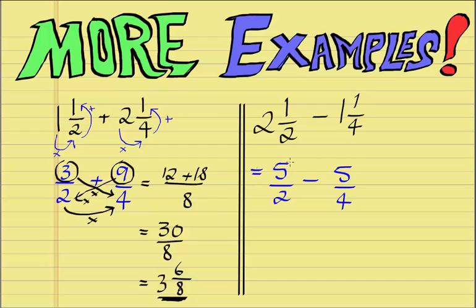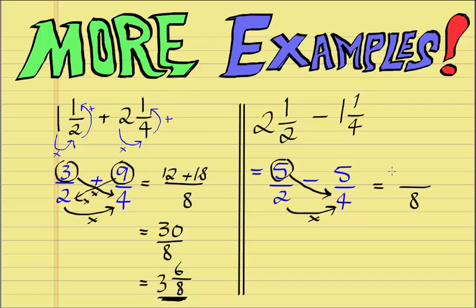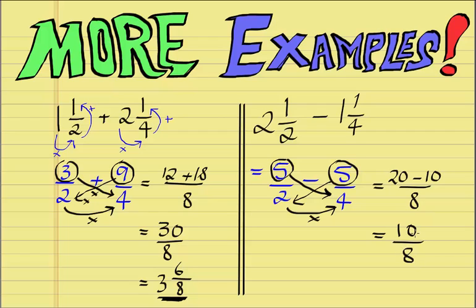Same rules apply. We multiply the denominators together first. So 2 times 4 is 8. Remember when it comes to subtraction, the order of the next steps is essential. The numerator of the first fraction gets multiplied by the denominator of the second fraction first: 5 times 4 is 20. We carry over our subtraction sign. Then we multiply the numerator of the second fraction by the denominator of the first fraction: 5 times 2 is 10. We subtract 10 from 20, which is 10, and keep our original denominator 8. Since 10/8 is an improper fraction, we divide 10 by 8, which is 1 with remainder 2. So 1 and 2/8 is our final answer.